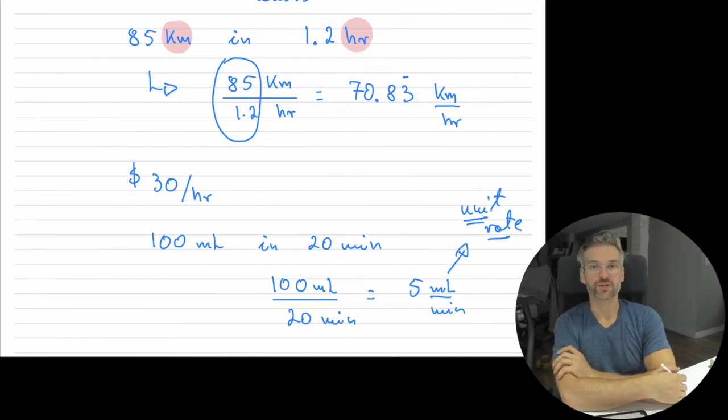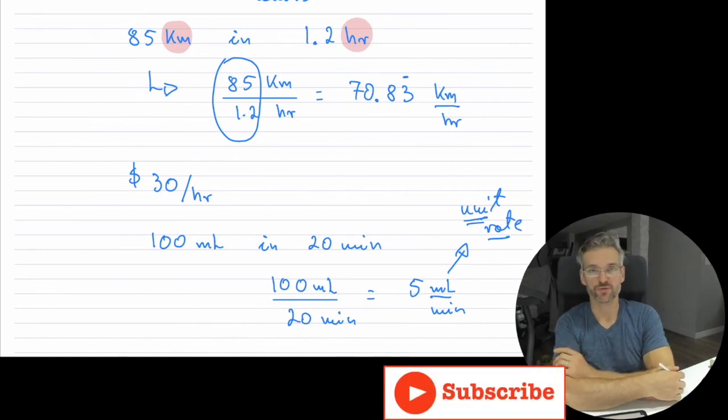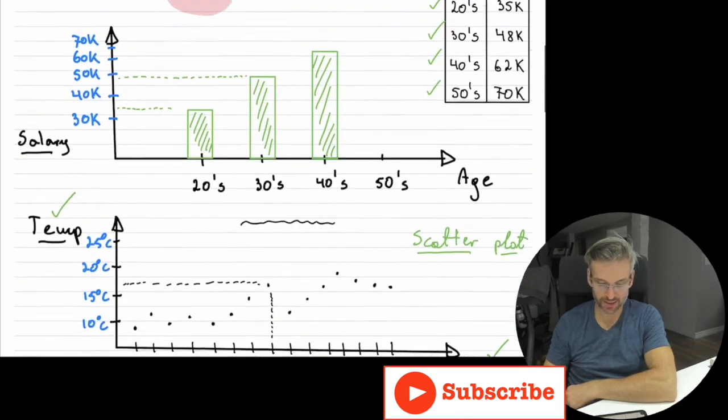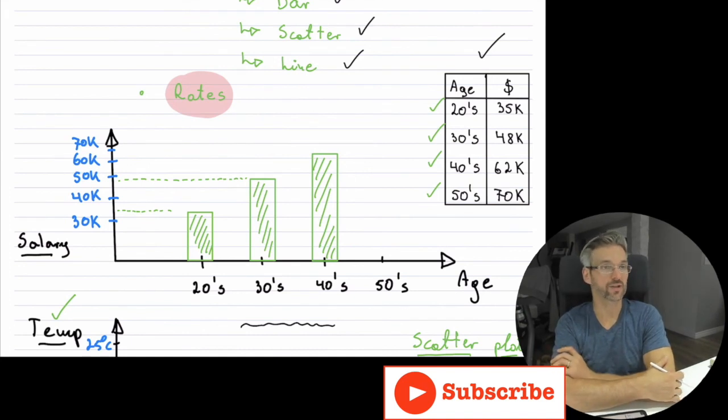So that's an introduction to relations. It is relationships between different quantities, different variables, and we can use graphs. We can use a table to try to represent these things. And they are kind of intuitive, so it's not that bad once you hear the words, bar graphs, scatter graphs, and line graphs, and rates, they do start making a little bit of sense. So thank you for watching. We will continue on with the videos in terms of relations. So we'll see you there. Take care, everybody. Bye.